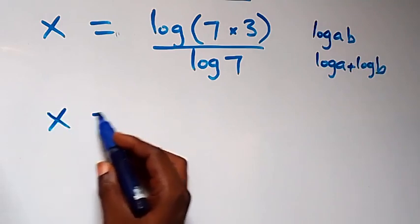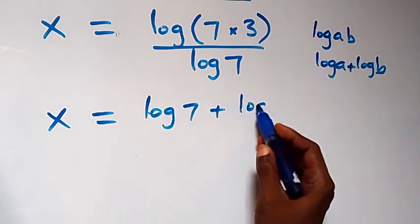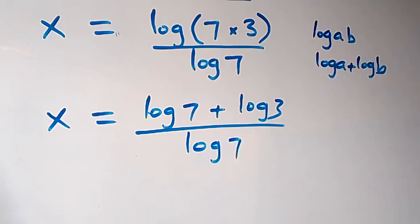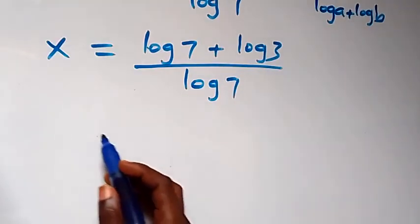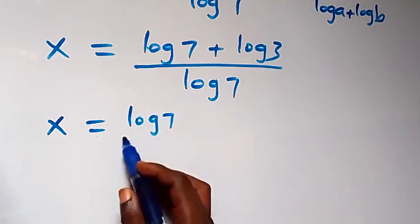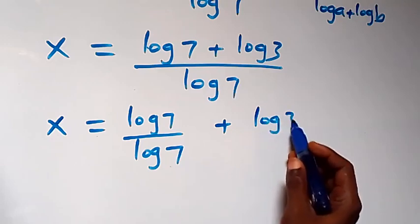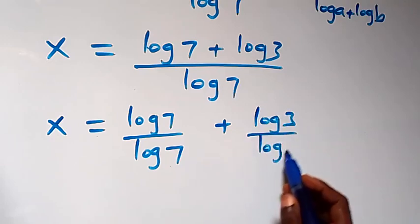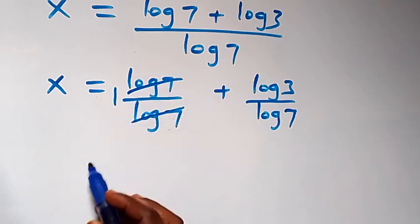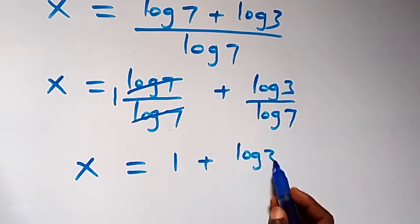Then we have x equals log 7 plus log 3, all divided by log 7. We can separate this fraction, giving x equals log 7 over log 7 plus log 3 over log 7. Since log 7 over log 7 equals 1, we have x equals 1 plus log 3 over log 7.